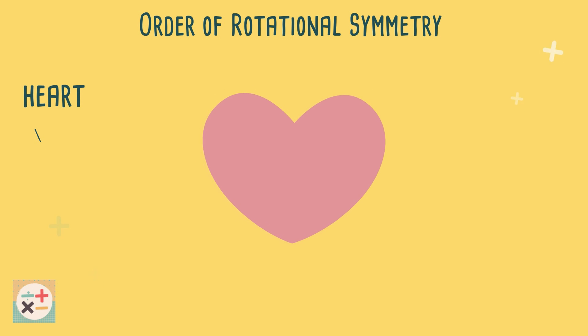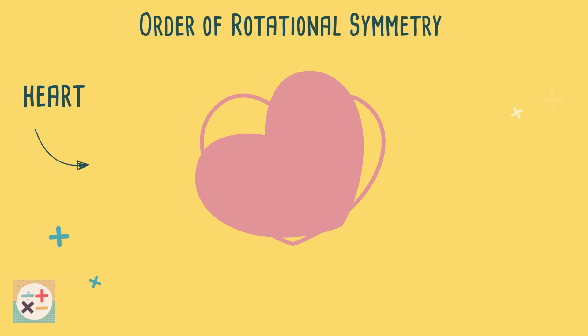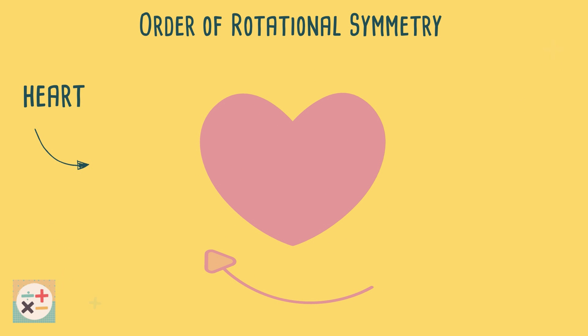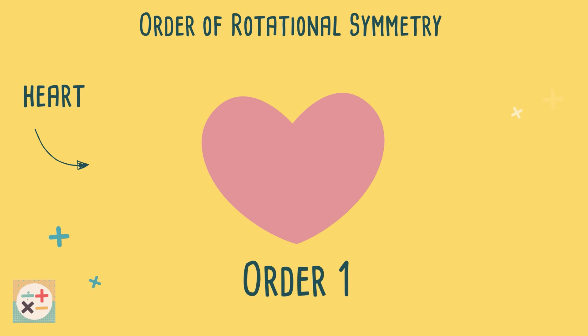If the shape only looks the same in one position when rotated, then it has no rotational symmetry. We can also say it has order 1, as it only looks the same at the starting position.